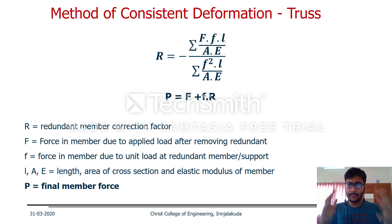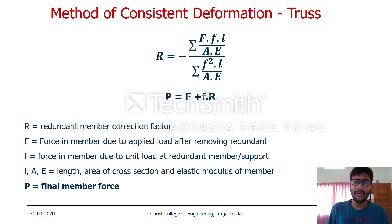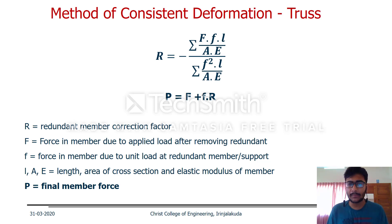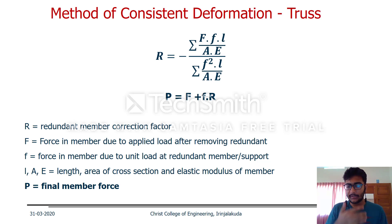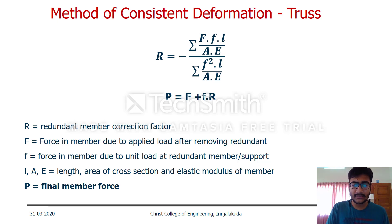The consistent deformation method essentially comes down to this simple formula: P equals F plus f·r, where r is equal to negative sigma of (F·f·L/A) divided by sigma of (f²·L/A). We will use this to solve two more trusses in this lecture.